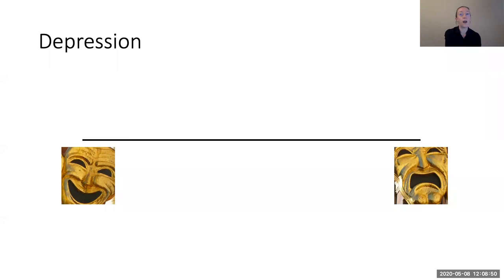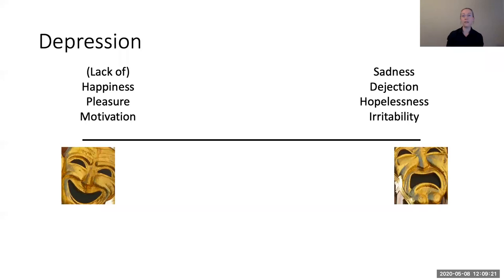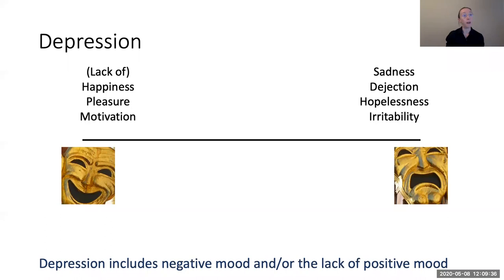Let's start with the phenomenology of depression — what does it look like? Everyone experiences some amount of variation in their normal mood, from more positive to more negative emotions. Depression is characterized by extreme mood disturbances that last for days, weeks, or longer and that cause significant distress and impairment. Depressed mood includes extreme negative emotions like sadness, dejection, hopelessness, and irritability. Importantly, depressed mood isn't just the adding on of negative emotions — it's also the taking away of positive emotions, or the lack of feelings of happiness, pleasure, or motivation. So depression can include both negative mood and/or the lack of positive mood.